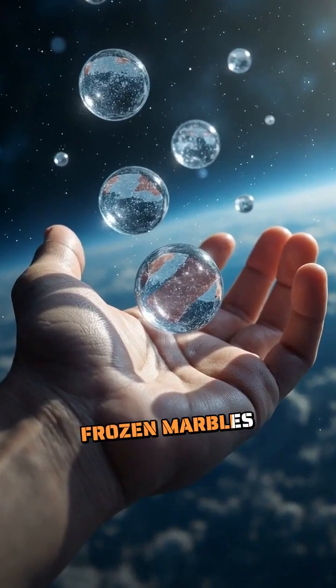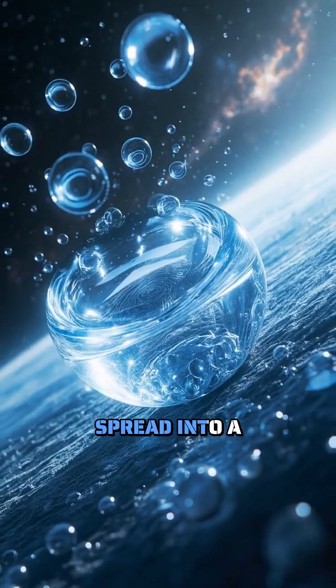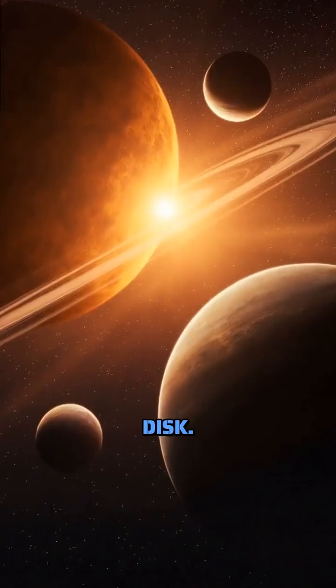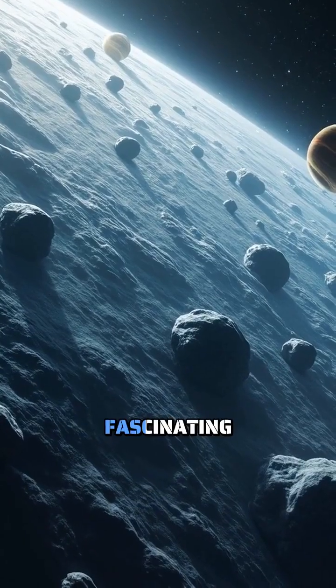Imagine throwing a handful of frozen marbles into space and watching them spread into a vast cosmic disk. That's somewhat like our solar system's Kuiper Belt, a fascinating region of space that stretches beyond Neptune's orbit.